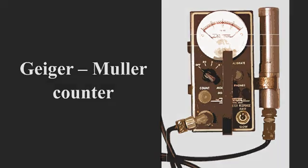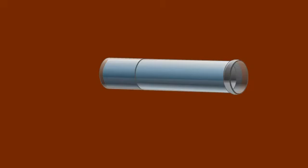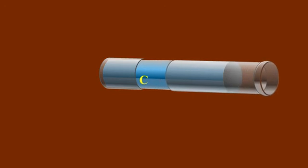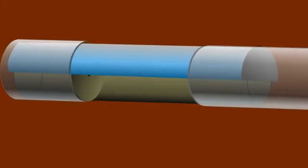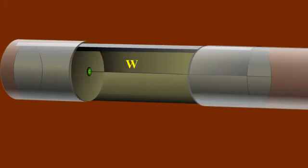Let us observe the construction. The Geiger-Müller tube consists of a metal tube with glass envelope C acting as a cathode and a fine tungsten wire W along the axis of the tube which acts as the anode.